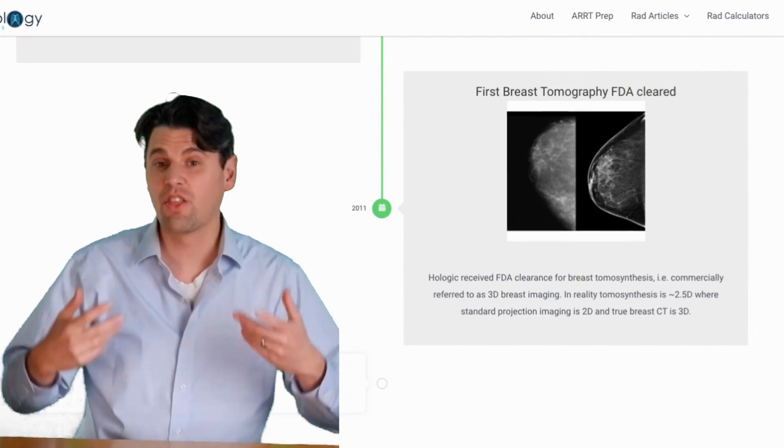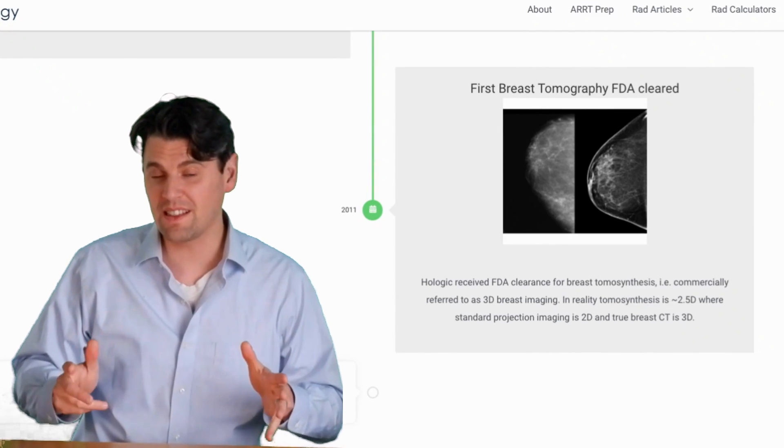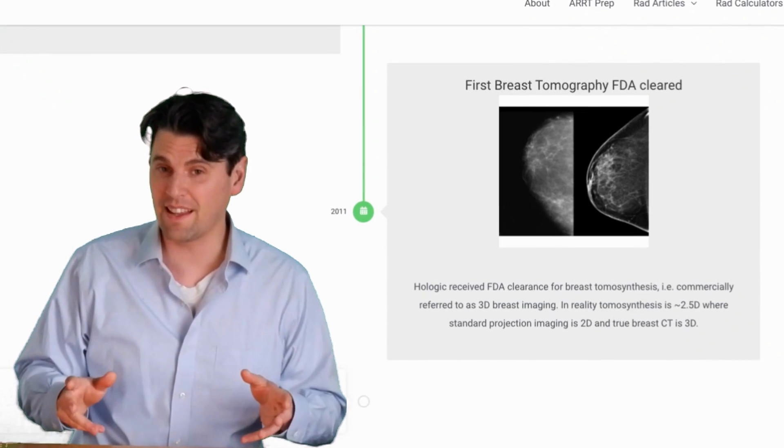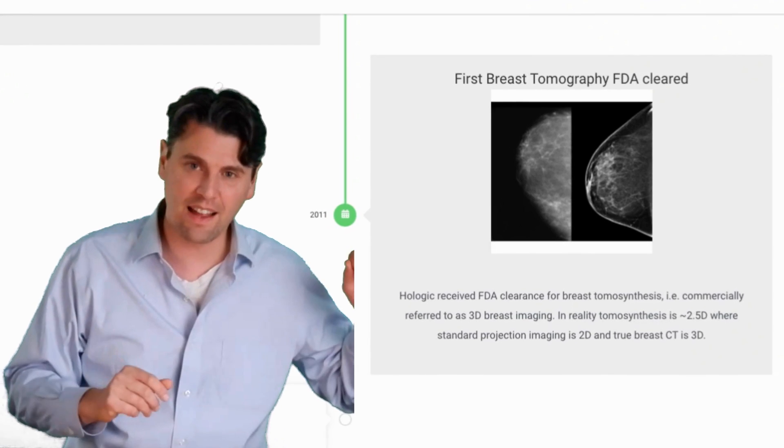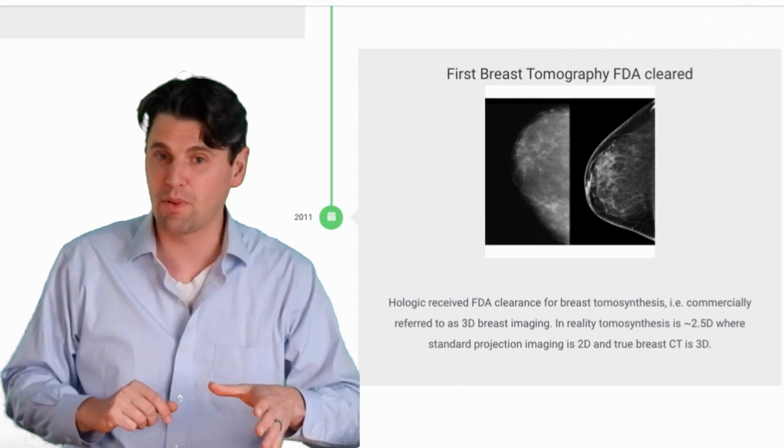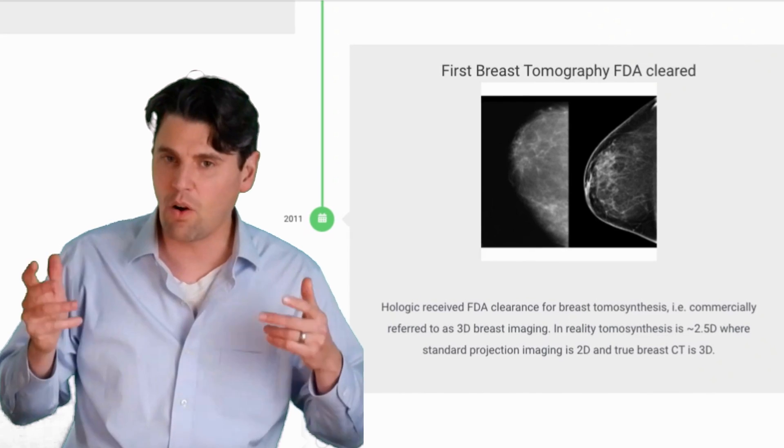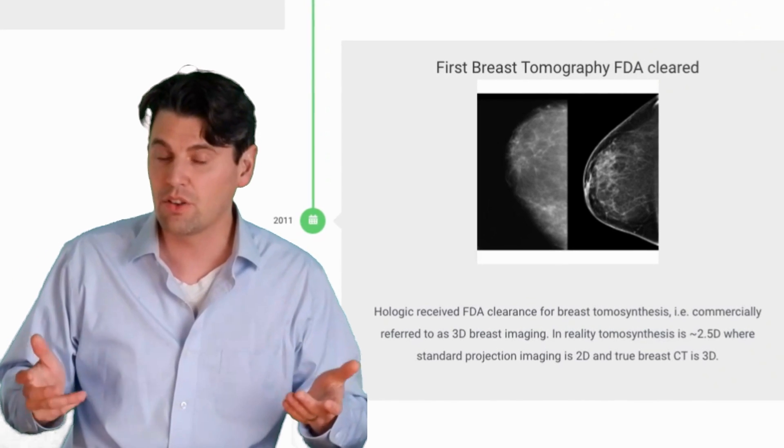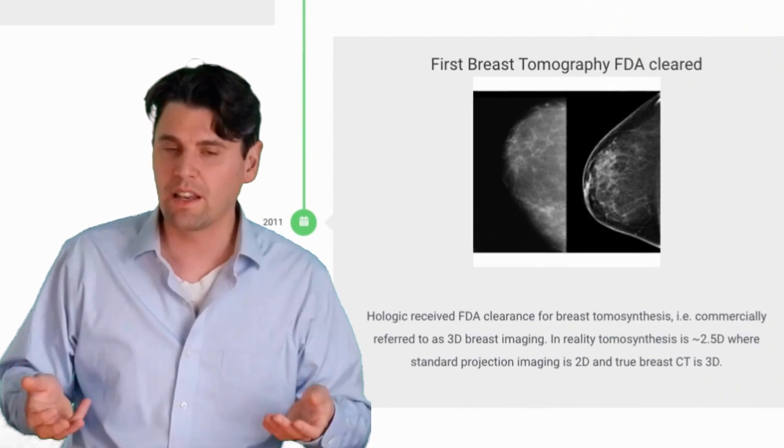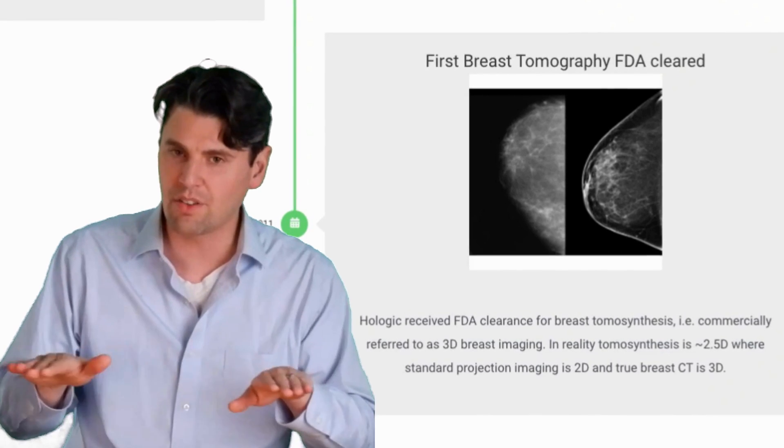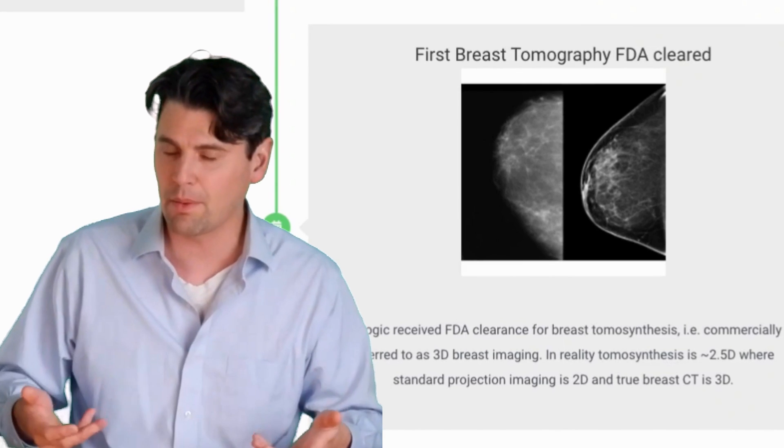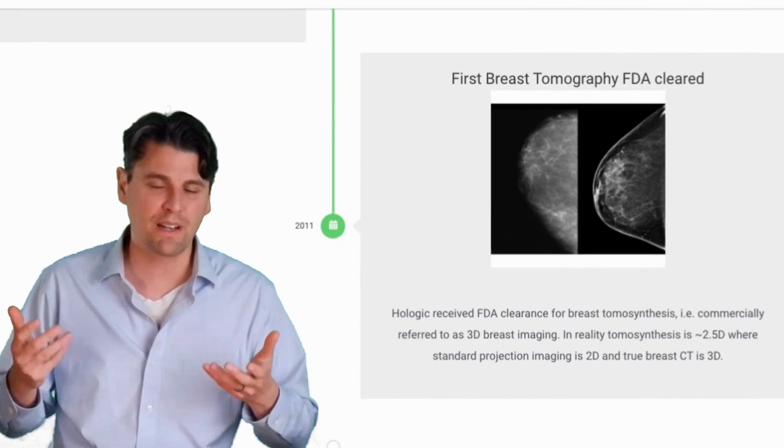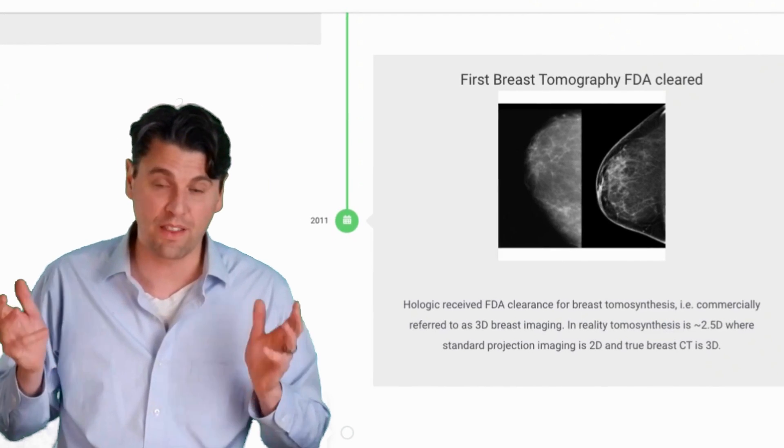In 2011, the first tomosynthesis imaging for breast imaging was FDA approved. So this is based on what we talked about earlier in linear tomography and in tomosynthesis imaging. It's now heavily used in the field to do breast imaging, wherein you can isolate the structures in a given plane better and kind of subtract out the structures in the neighboring plane. We call it 3D imaging, but 3D imaging of the breast would actually be with CT, and this is more like 2.5D imaging of the breast.